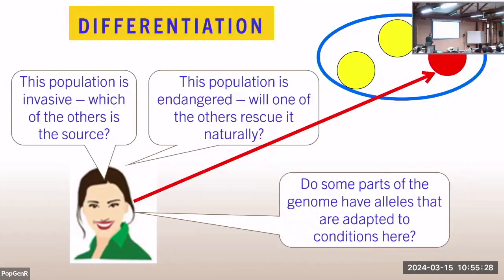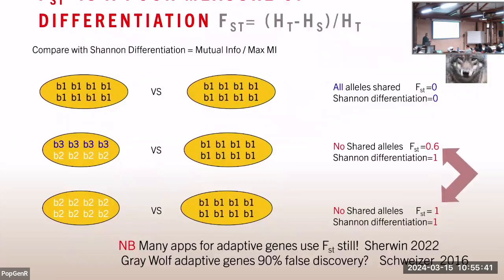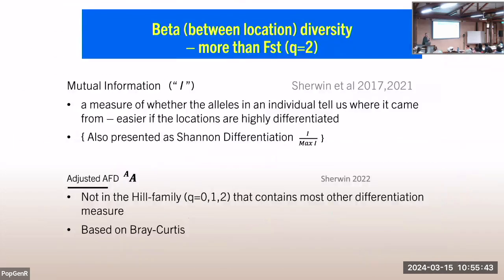Let's just start with this, which you already know. There are various things we want to know about differentiation: where invaders come from, whether there'll be natural rescue of endangered populations, whether alleles are adapted to conditions at particular places. I'm billed as presenting new methods. Well, these are the two methods and they've both been around since the middle of the last century and are very popular. What's new will come later, and a lot of the things that are new actually are really old — you just have to notice them.